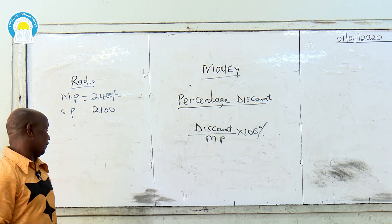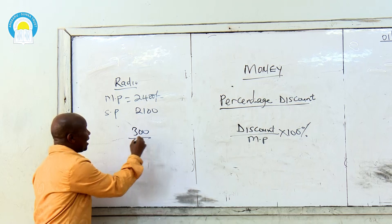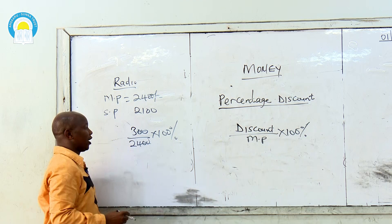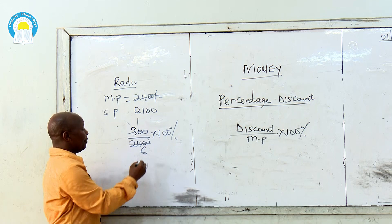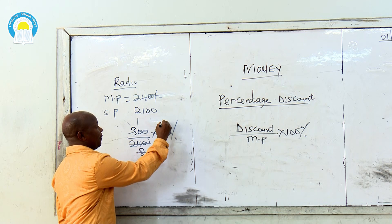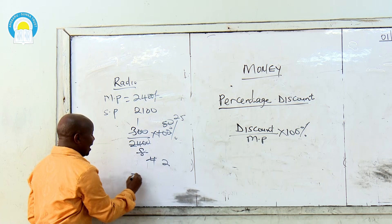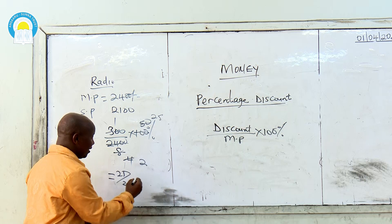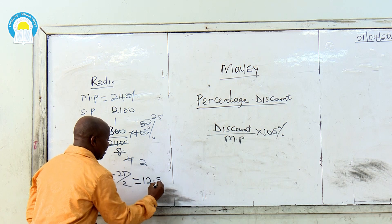To get the percentage discount, you say 300 divided by the marked price of 2,400, then multiply by 100%. The two zeros cancel. Simplifying: 300 over 2400 × 100% gives 25 over 2, which is equivalent to 12.5%. So the percentage discount is 12.5%.